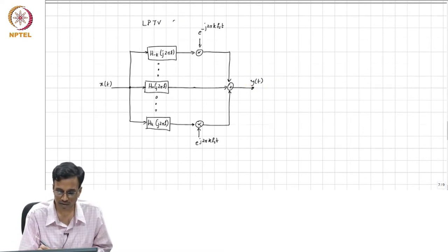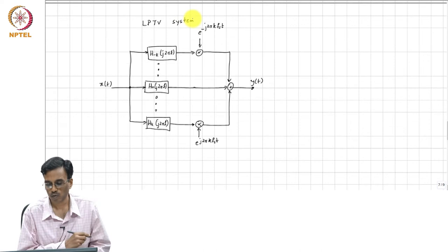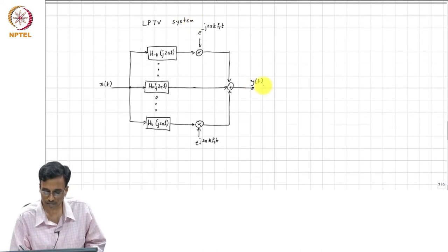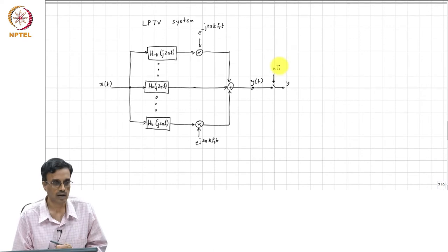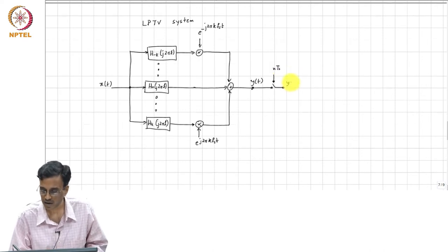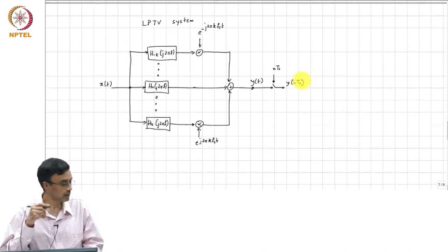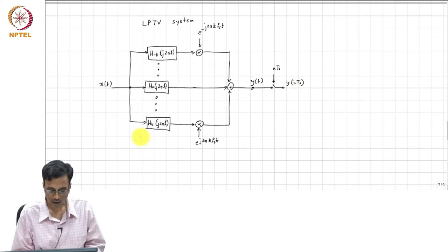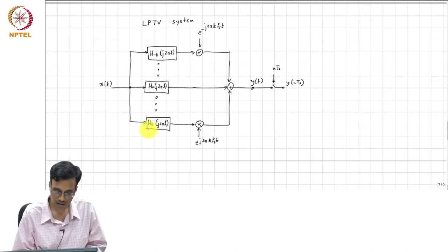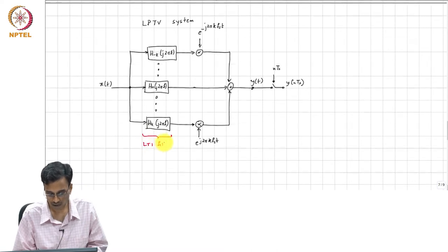So this is V_I of T — this is x of t and y of t. This is the LPTV system. We are interested in the sampled value of the output, y of n T_s. To refresh your memory, these are all linear time-invariant filters.